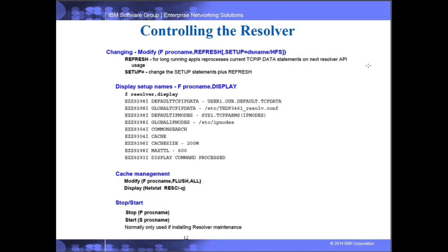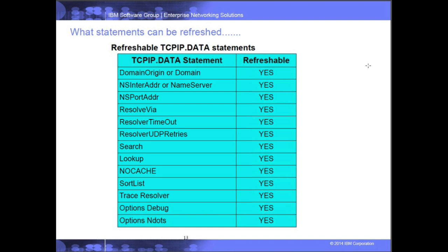The last control methods are STOP and START to stop or start the Resolver proc — normally not used often, but needed when installing Resolver maintenance that requires reinitialization. The foil on page 13 lists the statements in the TCPIP.data file that can be refreshed. Not everything in the TCPIP.data file is refreshable, so only changes to statements on that list will be updated when you issue a refresh.